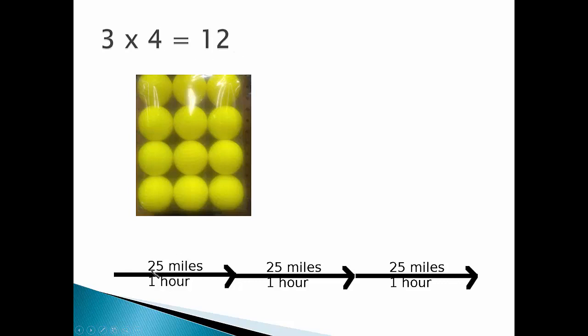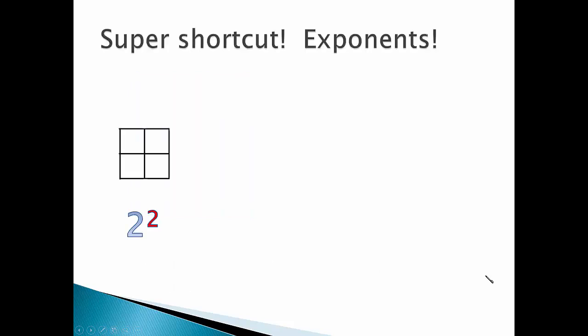If I ride 25 miles an hour for 3 hours, I'll be 75 miles down the road. We have a super shortcut for when we're not adding the same thing but multiplying the same thing called exponents or powers.